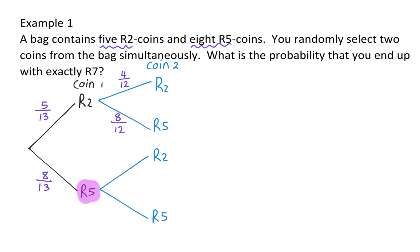If the first coin was a five-rand coin, out of the original eight, we now have seven five-rand coins left. So for the second coin to also be a five-rand coin, we have seven left out of the twelve. For the second coin to be a two-rand, we have all five two-rand coins out of the twelve that are left. You can test yourself by adding the five over twelve and the seven over twelve, and the four over twelve and the eight over twelve to check that it adds up to one.